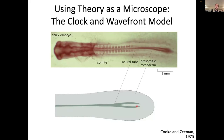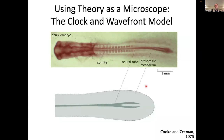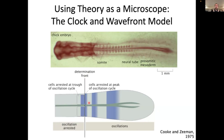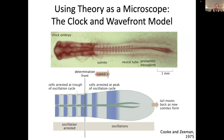What they proposed is that there are oscillations propagating from the posterior to the anterior of the tailbud. But once those oscillations hit a so-called determination front, they get fixed. The concept is that if they get fixed on a peak of the oscillation, that is the posterior part of the somite, and if they get fixed on the trough, that's the anterior part of the somite. Further, they realized that if this determination front moves as the tailbud grows, then you're going to get a rhythmic specification of these somites.